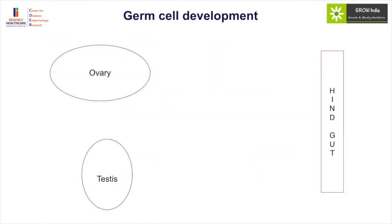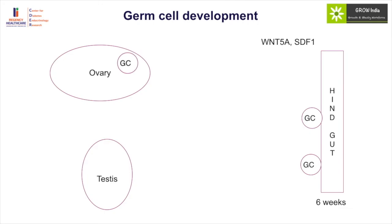Once the gonads are formed, the next important aspect is the germ cells. These germ cells are produced by the hindgut at around six weeks of gestation and from there migrate across different parts of the body through chemotactic movements. When germ cells migrate and reach the ovaries — under the influence of retinoic acid and the gene STRA8 — they undergo meiosis, followed by meiotic arrest around 10 to 11 weeks. They then develop into oocytes, with a significant number of oocytes present by the end of gestation, serving as the source for subsequent cycles.